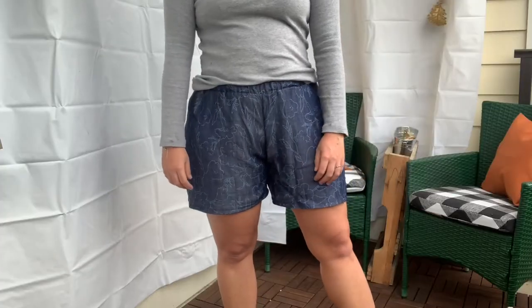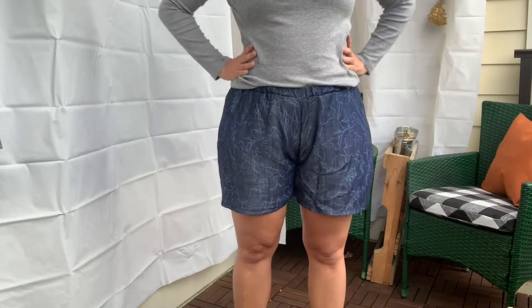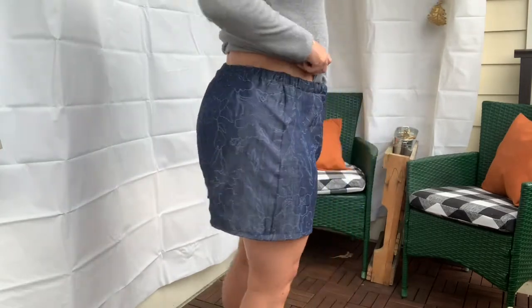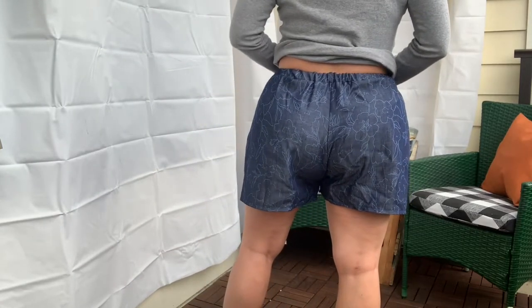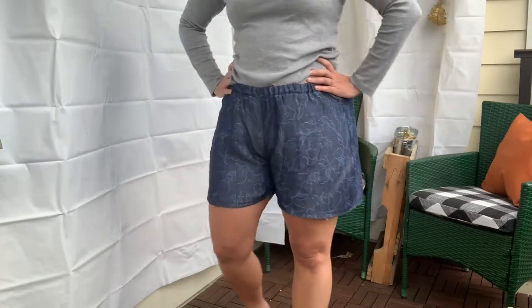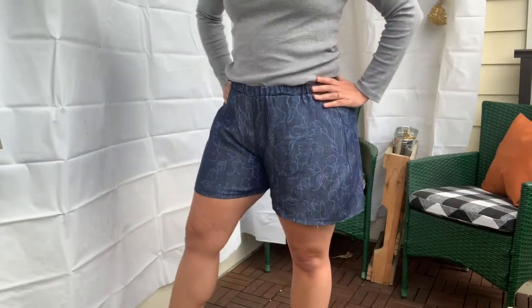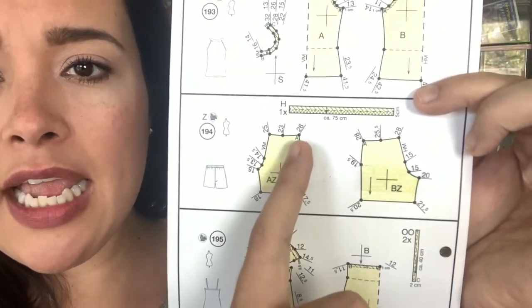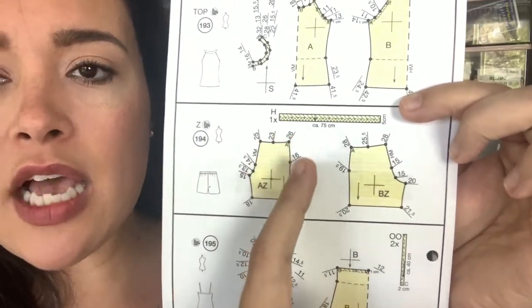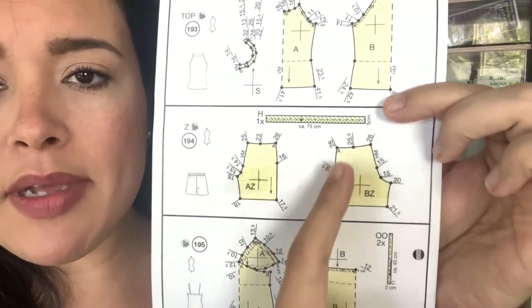When it comes to instructions, the short answer is no, there are not instructions written out like you will find in most patterns. However, there are little indicators on the pattern itself that tell you how things are lined up, sort of similar to Burda style and how they have pattern markings that show the order of operation. For these shorts, you will see here that there is an A in this corner and an A in this corner, and that's how you know that this is the side seam.